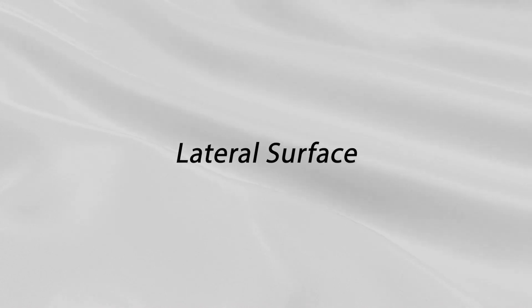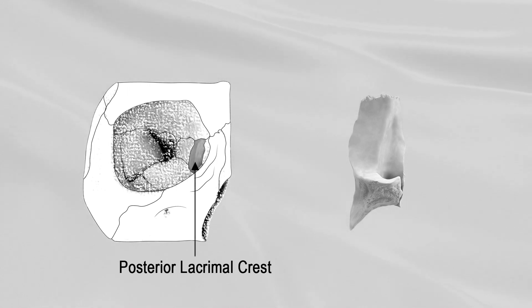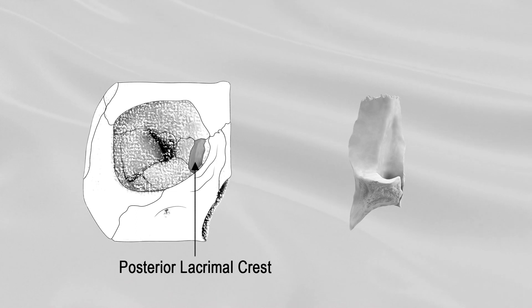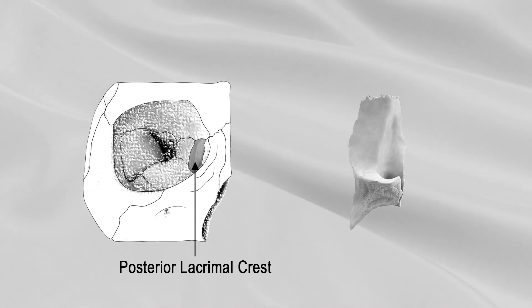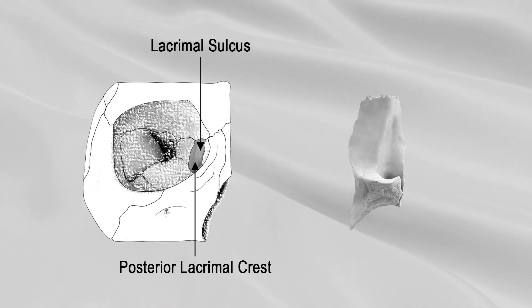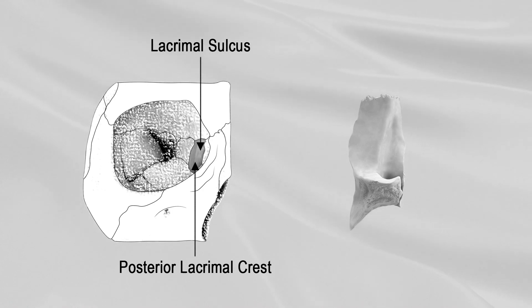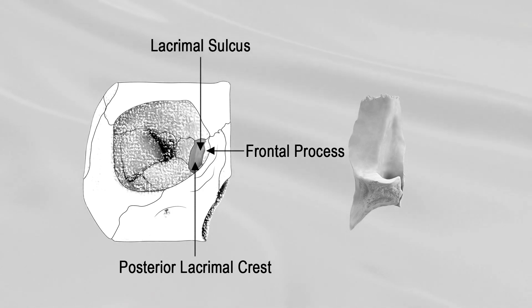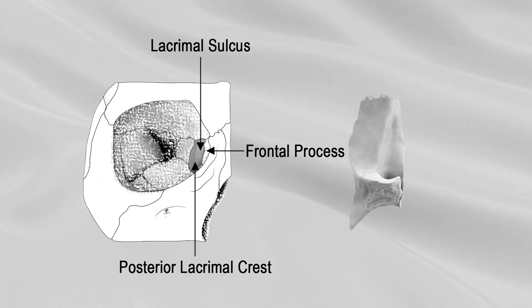LATERAL SURFACE. The lateral or orbital surface is divided by a vertical ridge, the posterior lacrimal crest, into two parts. In front of this crest is a longitudinal groove, the lacrimal sulcus, the inner margin of which unites with the frontal process of the maxilla, and the lacrimal fossa is thus completed.